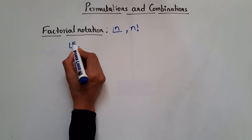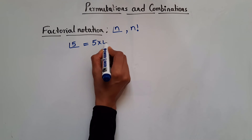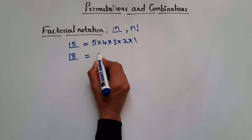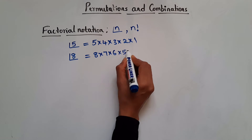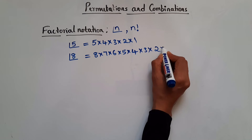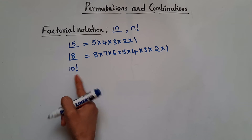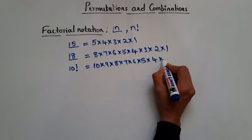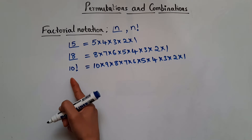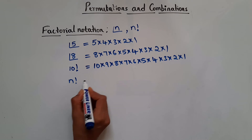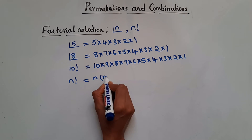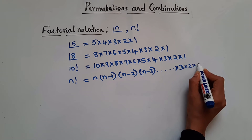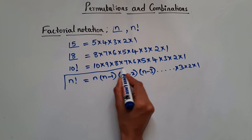Let's say we have 5 factorial. So 5 factorial is nothing but 5 × 4 × 3 × 2 × 1. Similarly, 8 factorial is 8 × 7 × 6 × 5 × 4 × 3 × 2 × 1. And 10 factorial is 10 × 9 × 8 × 7 × 6 × 5 × 4 × 3 × 2 × 1. In general, n factorial equals n × (n−1) × (n−2) × (n−3) × ... × 3 × 2 × 1.